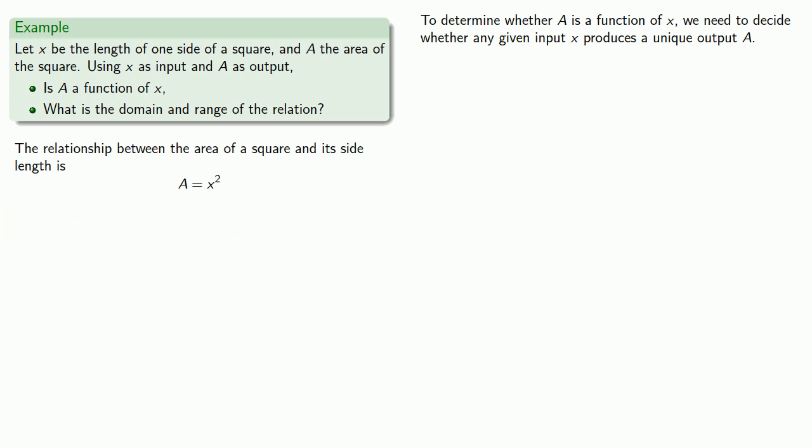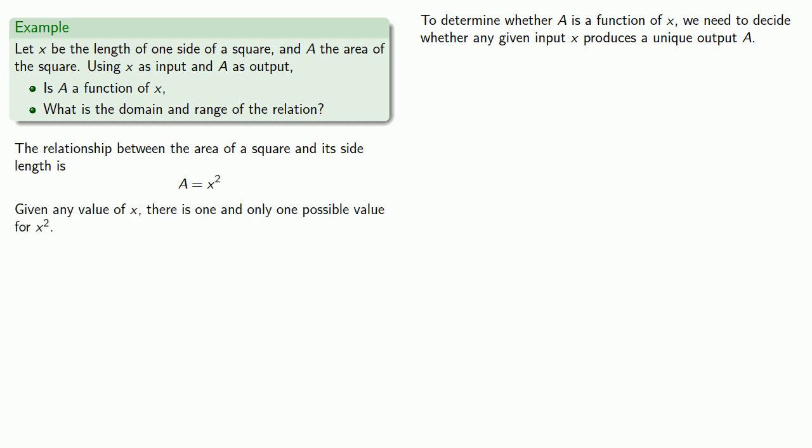The advantage of algebra is the following: if we have a specific value of x, we find the area by computing x squared. Since this is just an arithmetic formula, there's only one possible value for x squared. So given any value of x, there is one and only one possible value for x squared. Therefore, a is a function of x.